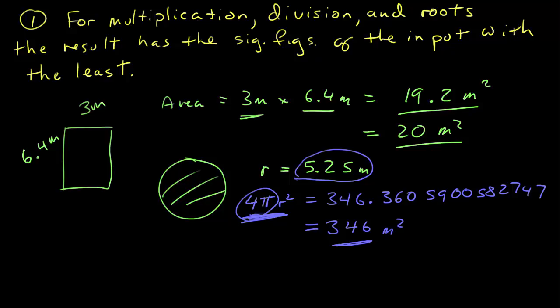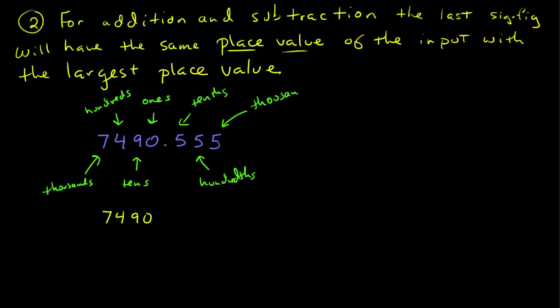Note that in both of these cases, we rounded to the nearest. So 346 we rounded down, whereas we rounded up to 20. The second rule is for addition and subtraction. For addition and subtraction, the last significant figure of the result will have the same place value as the input number with the largest place value.